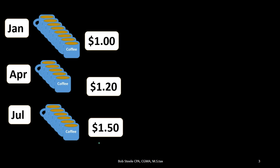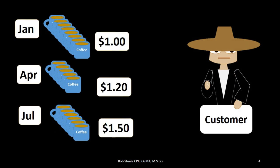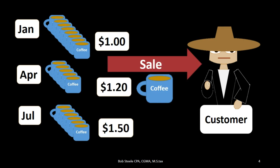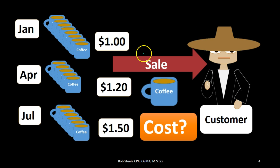We're stockpiling them, expecting to sell them at some point. We now have $23 on our balance sheet, which is the number of mugs bought in January times $1, plus April's mugs times $1.20, plus July's mugs times $1.50. That's the $23 we have as inventory. We then have a customer asking for a coffee mug — our first sale — and we'll sell it for $5. The issue is: what is the cost of that coffee mug? Is it $1? Is it $1.20? Is it $1.50?